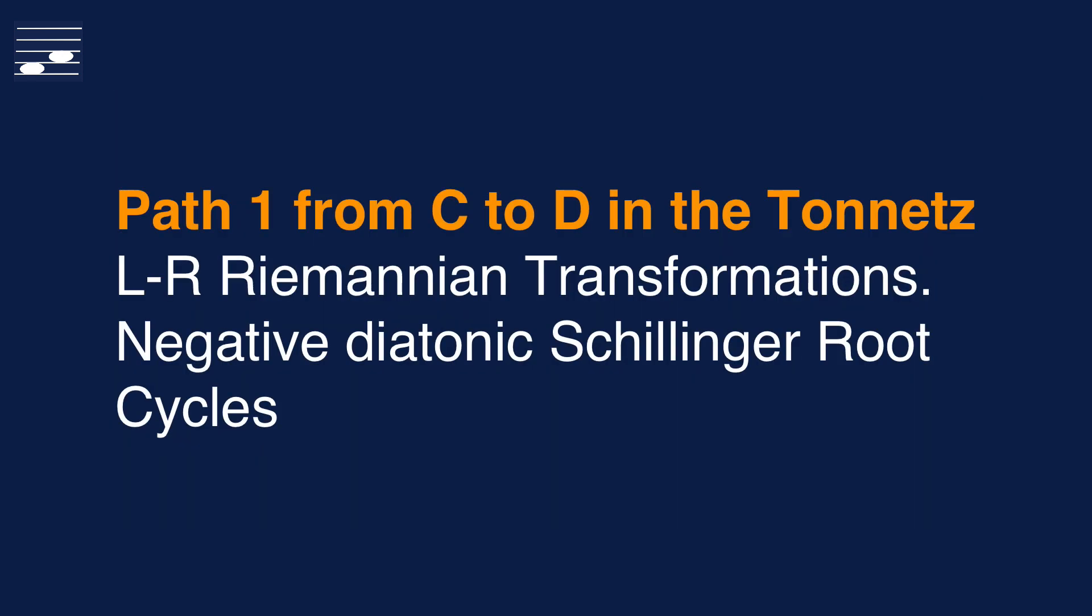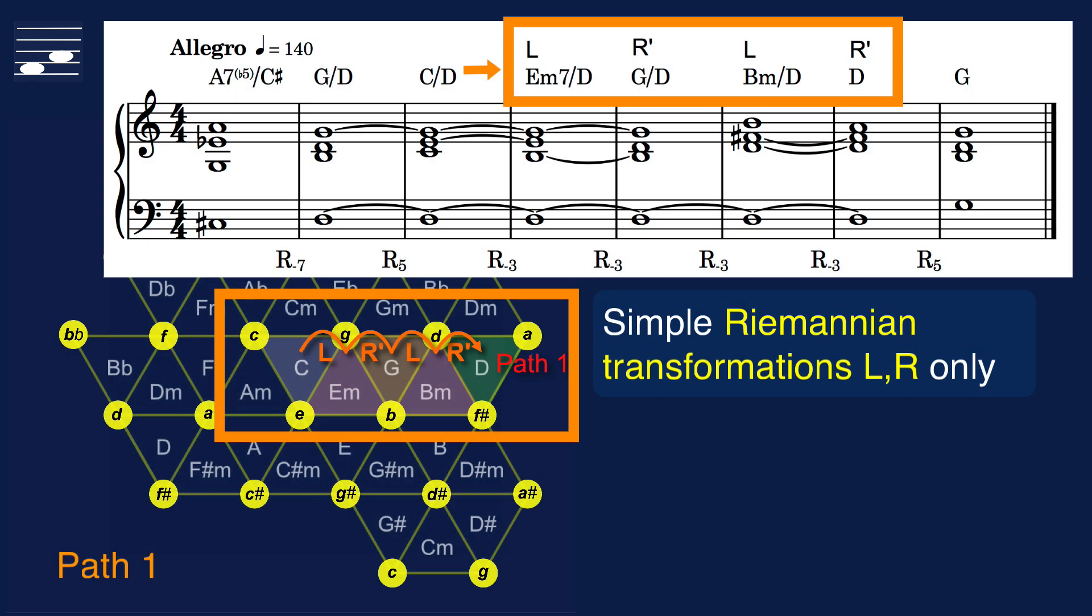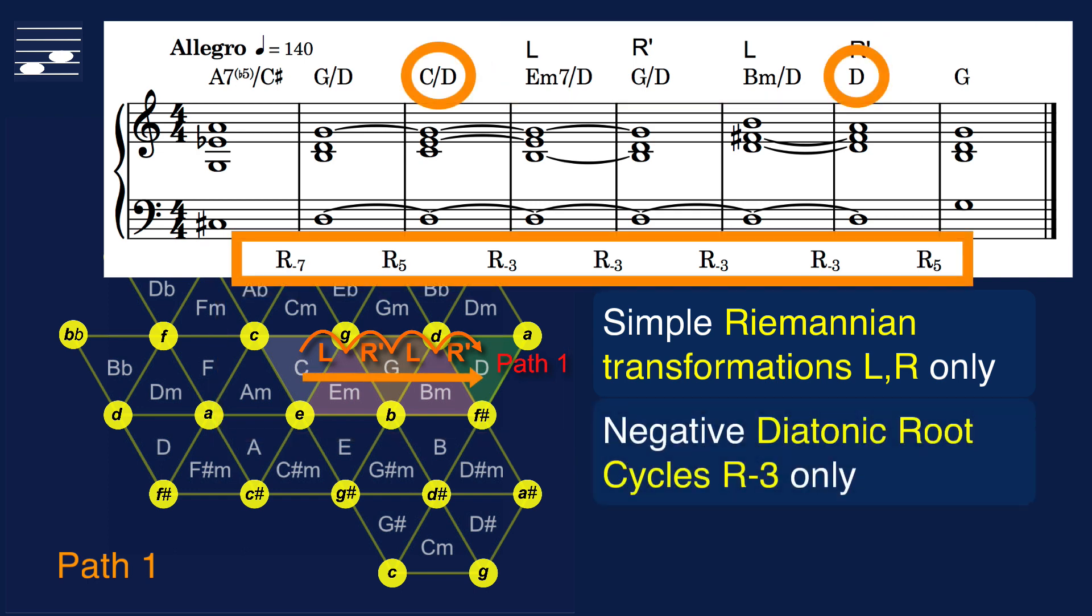In the first from the total of five paths we move from C to D in the Tornetz by using L and R simple transformations only, which yield negative diatonic root cycles. In the Tornetz note the shortest possible path from C to D with a set of simple L and R Riemannian transformations. This path is also marked in the chord progression shown at the top.